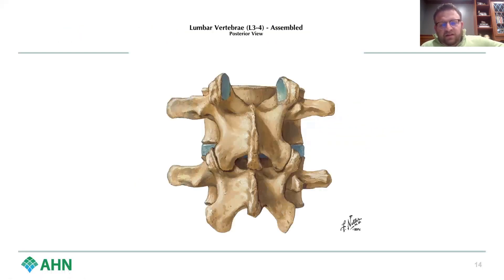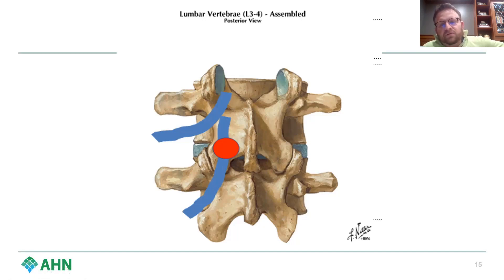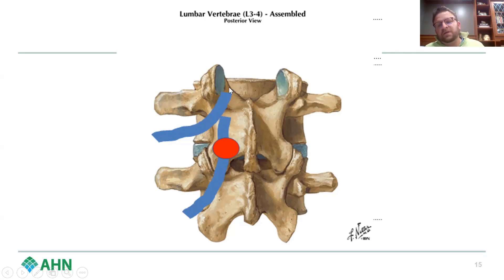Here is a traditional anatomic picture of the L3-4 vertebrae. You can see the exiting nerve root above as it comes out of the foramen, and the traversing nerve root below. I always describe this using a freeway analogy — think of the nerve roots as cars getting off the freeway. They come to their exit point and move more and more to the outside of the spinal canal as they approach their destination.